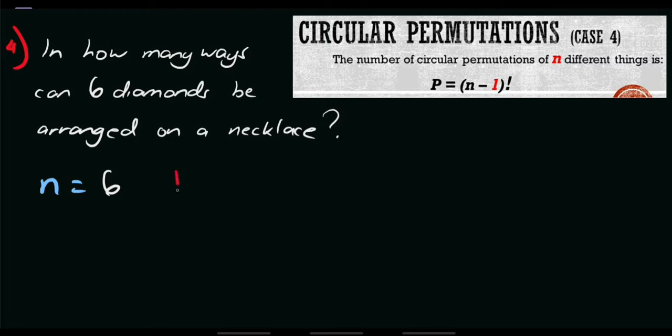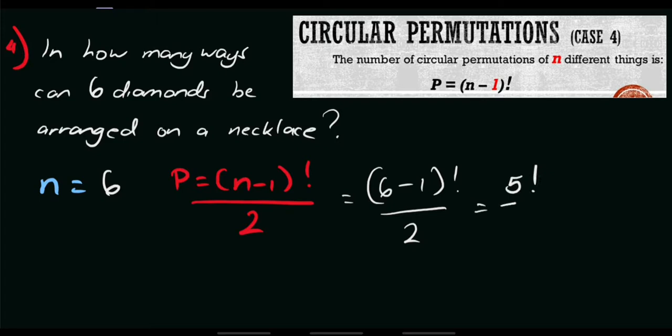That equals P. Our formula is P equals N minus 1 factorial all over 2. That's what we added, divide it by 2. So, by simplifying this, this equals 6 minus 1 factorial all over 2. And 6 minus 1 equals 5 factorial all over 2. So, 5 factorial equals 5 times 4 times 3 times 2 times 1 which equals 120 divided by 2. Therefore, we have 60 ways for this given problem.